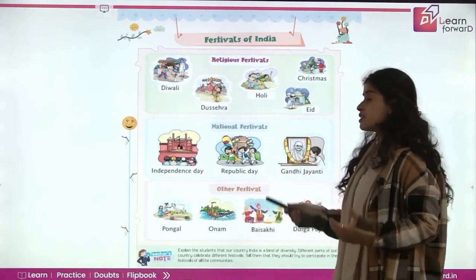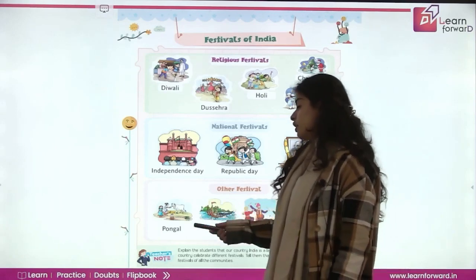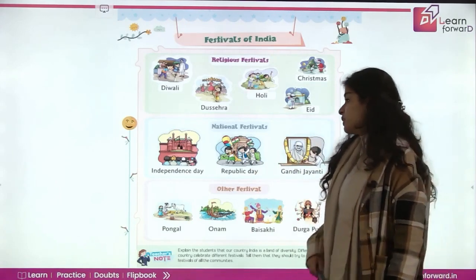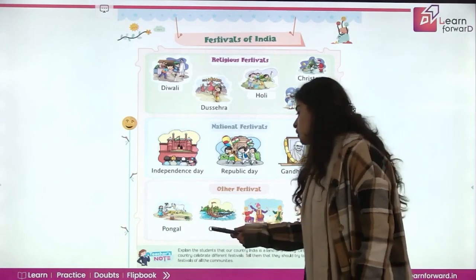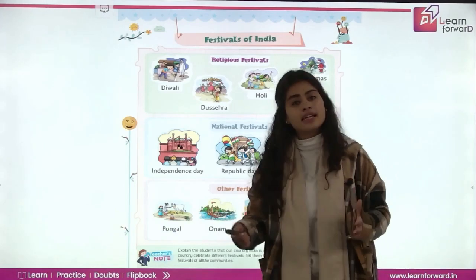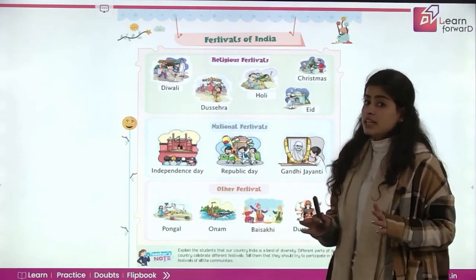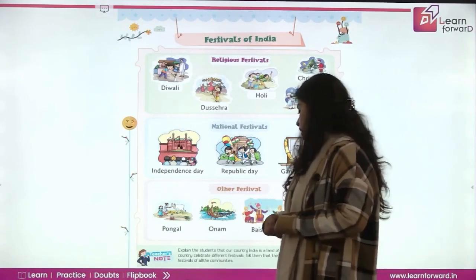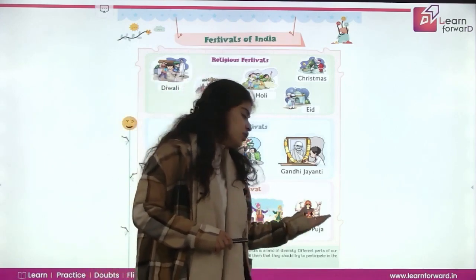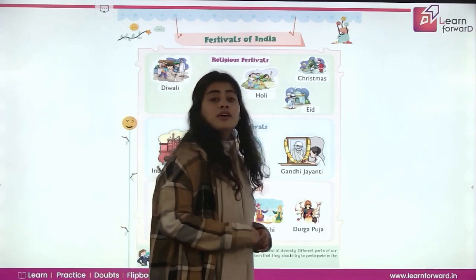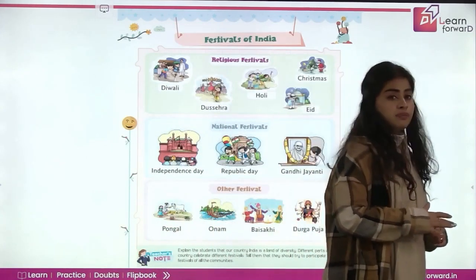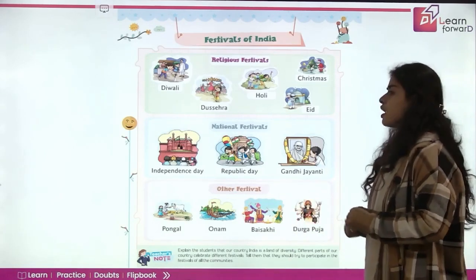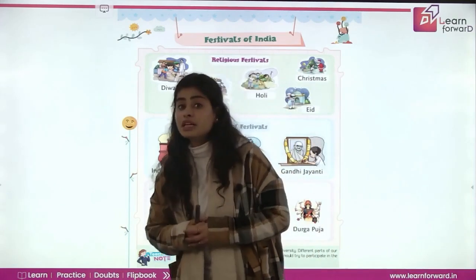Next, there are some other festivals. Like Pongal — this is the festival of Tamil Nadu. In Tamil Nadu, this is the state where we celebrate the Pongal festival. Next is Onam. Onam is the festival of Kerala. Next is Baisakhi. Baisakhi is celebrated in Punjab. Next is Durga Puja. Durga Puja is in West Bengal. So there are many festivals in our country that we celebrate together.